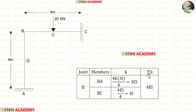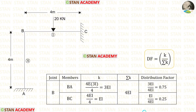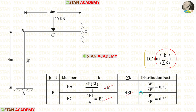Now let us find sigma K by adding the two stiffness values. After adding, we get a total sigma K of 4EI. Using the formula — distribution factor equals k divided by sigma K — and the calculated values, we can now find the distribution factors for each member at joint B.